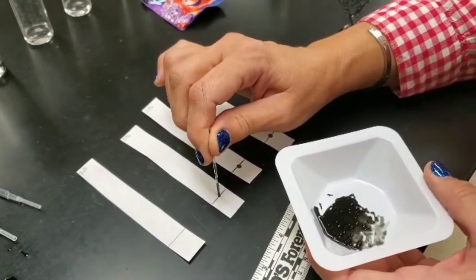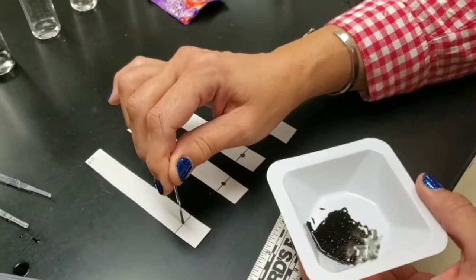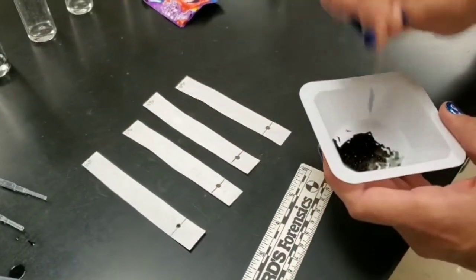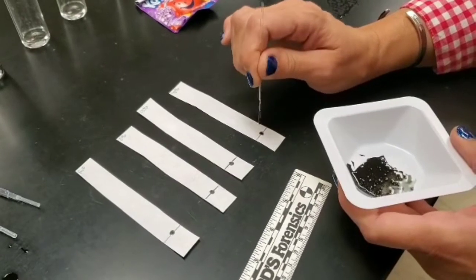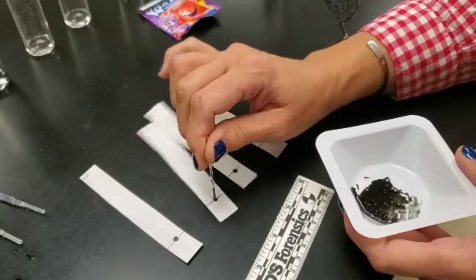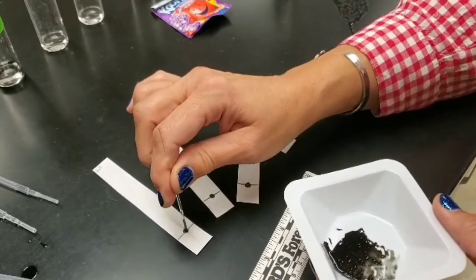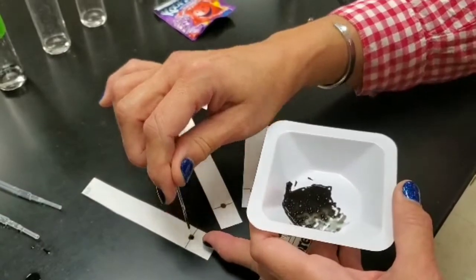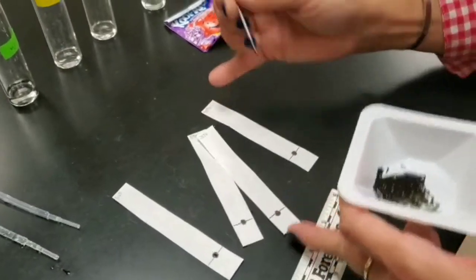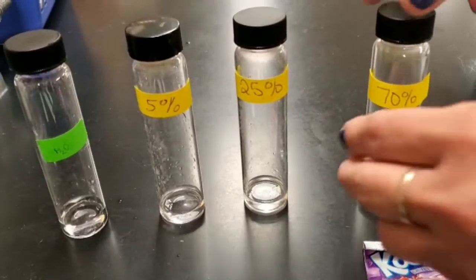We are going to make four chromatograms because we're going to test four different solvents and we're going to see which solvent gives us the best separation. Once these chromatograms are prepared, we will place them in their containers that already have their solvents in them and they are capped to ensure that the air inside the bottles becomes at equilibrium.